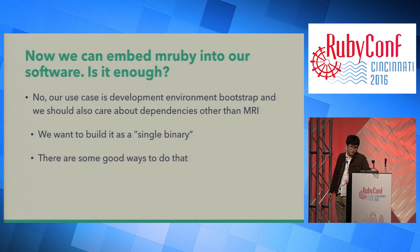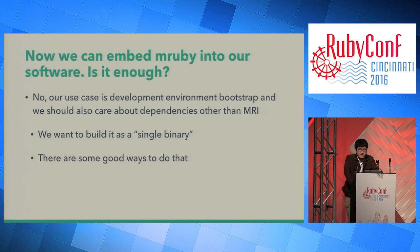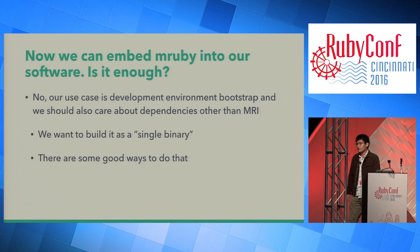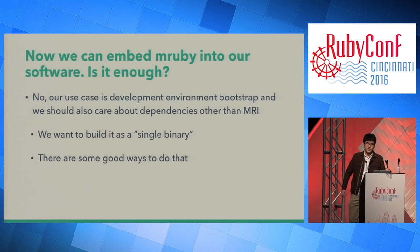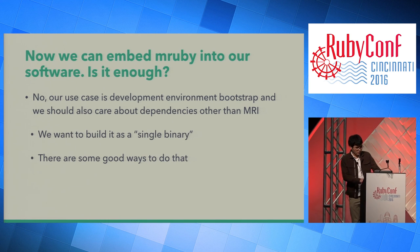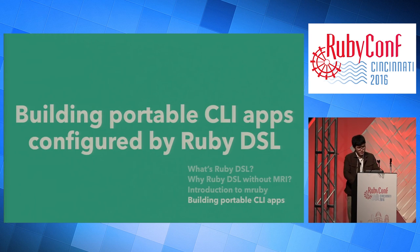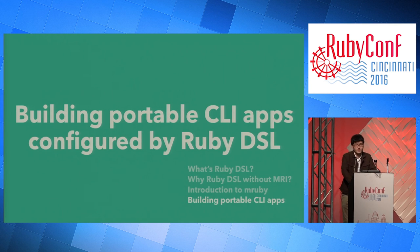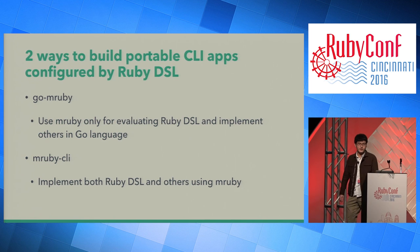Now we can embed MRuby into our software — but is it enough? No. Our use case is development environment bootstrap, so we should also care about dependencies other than MRI. We want to ship it as a single binary which does not depend on other dynamic libraries. I tried two ways to do that, and I'll compare them. The main contents of today are two ways to build portable CLI apps configured by Ruby DSL.